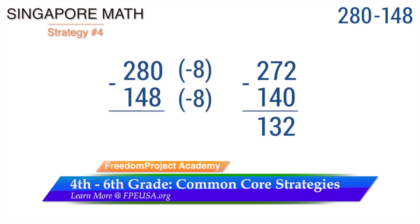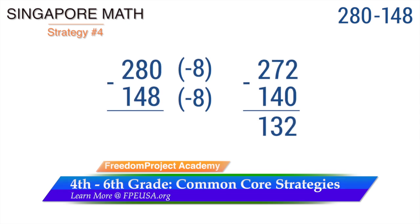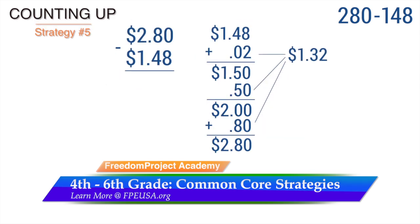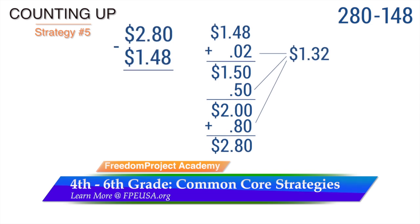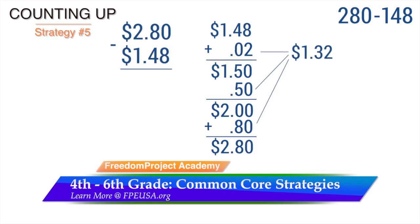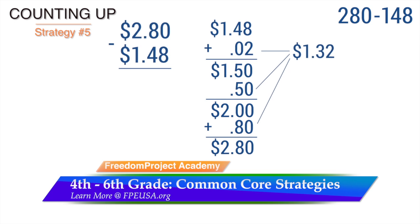The Singapore math strategy avoids borrowing by subtracting 8 from both 280 and 148. I am not certain how one can say that no borrowing took place when 8 was subtracted from 280. Counting up, or giving change: in this method, 280 is changed to $2.80 and 148 is changed to $1.48, and increments of money are added to $1.48 to reach $2.80.